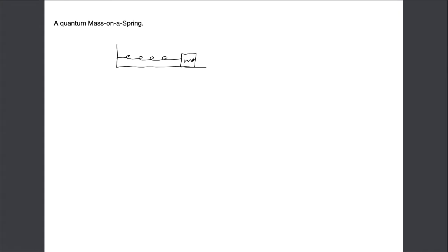The spring has a spring constant k, and the mass has a mass m. There is some equilibrium position where the spring is neither compressed nor stretched. If we stretch the spring and release it, it'll vibrate back and forth. The mass will go back and forth with kinetic energy and potential energy, exchanging between the two. The velocity and position are continuously changing.